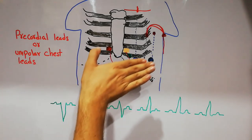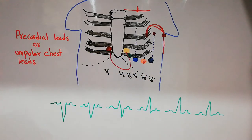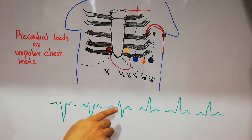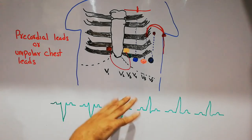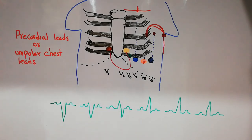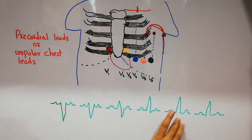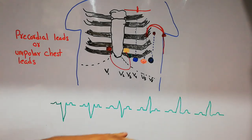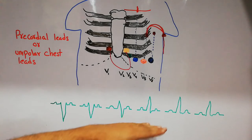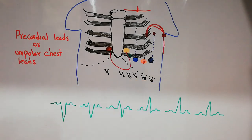The remaining leads are present on the myocardium of the heart. V3 shows isoelectric activity with equal positive and negative deflection, while the fourth, fifth, and sixth chest leads mostly show positive deflections.